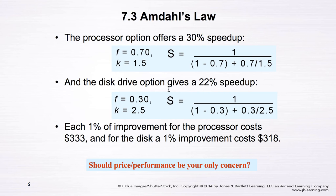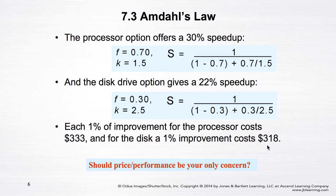Since the two options have different costs, we can compare the cost per 1% improvement. For the processor upgrade: 30% improvement at $10,000 means each 1% improvement costs approximately $333. For the disk drive upgrade: 22% improvement at $7,000 means each 1% improvement costs approximately $318. Therefore, the disk drive upgrade is the better option — it delivers the same 1% system improvement at a lower cost than the processor upgrade.